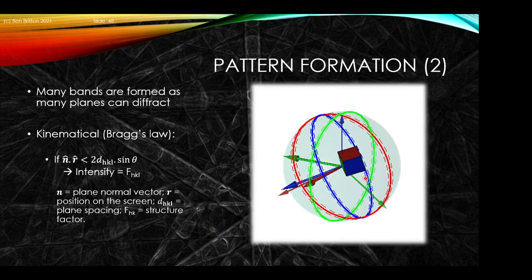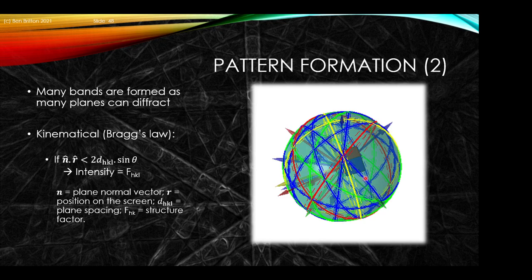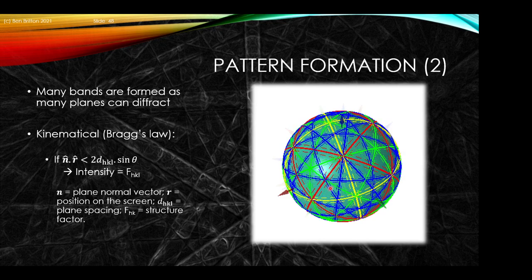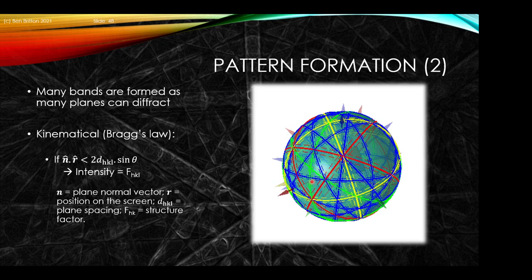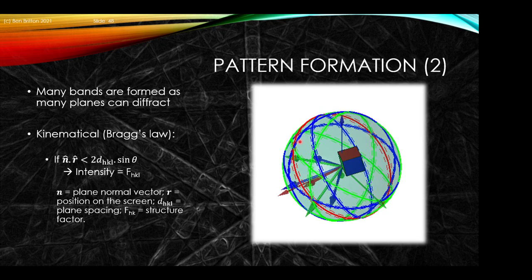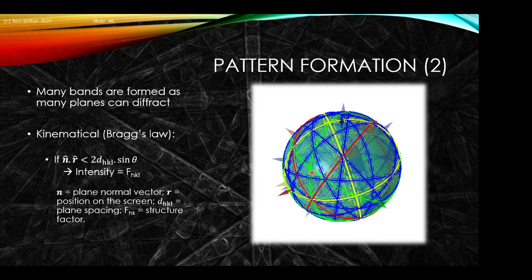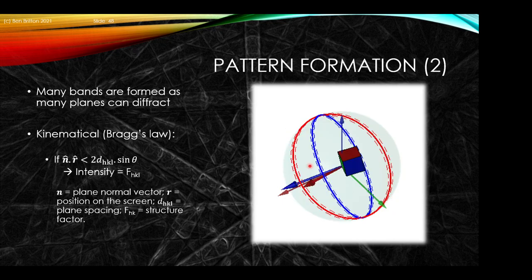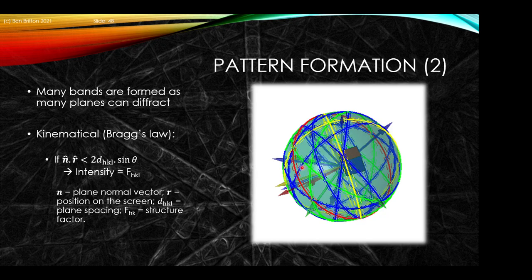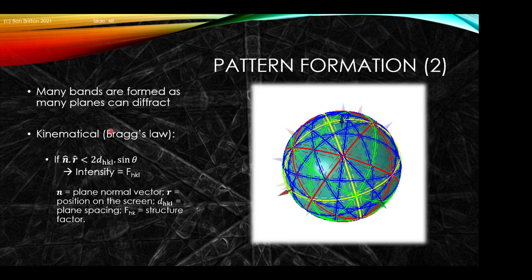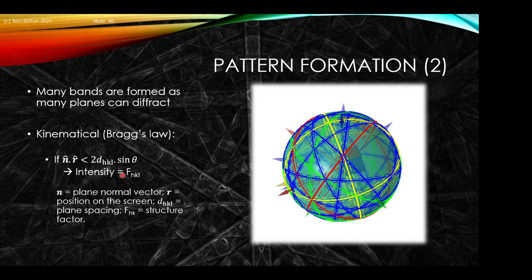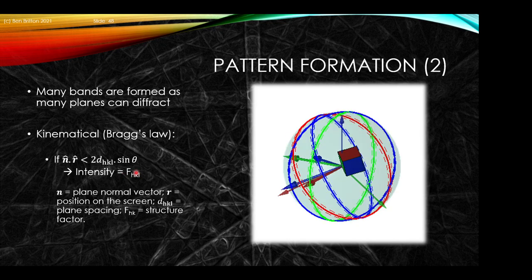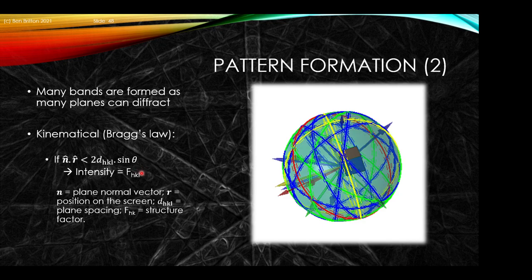As we do this across multiple diffracting planes, we build up a diffraction sphere that contains multiple projections of the crystal planes. Each of those bands inscribed on the sphere corresponds to a specific diffracting plane. In the kinematical approximation, the intensity is a function of the scattering structure factor for that crystal.